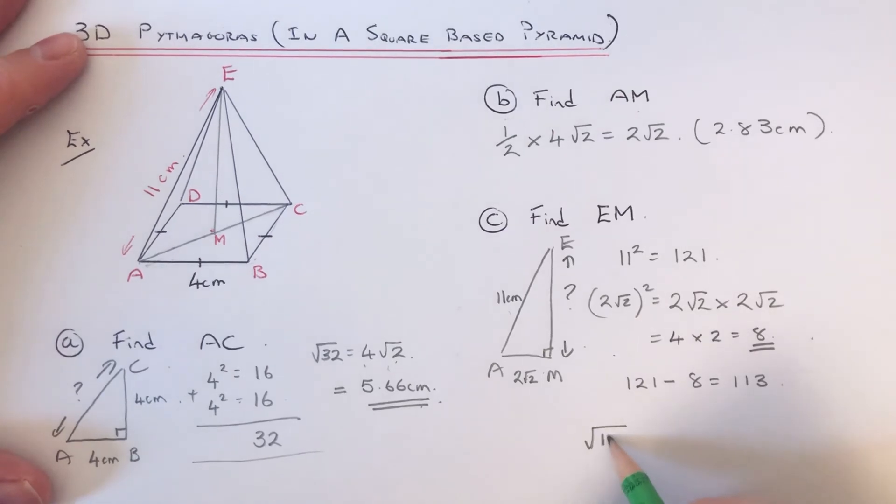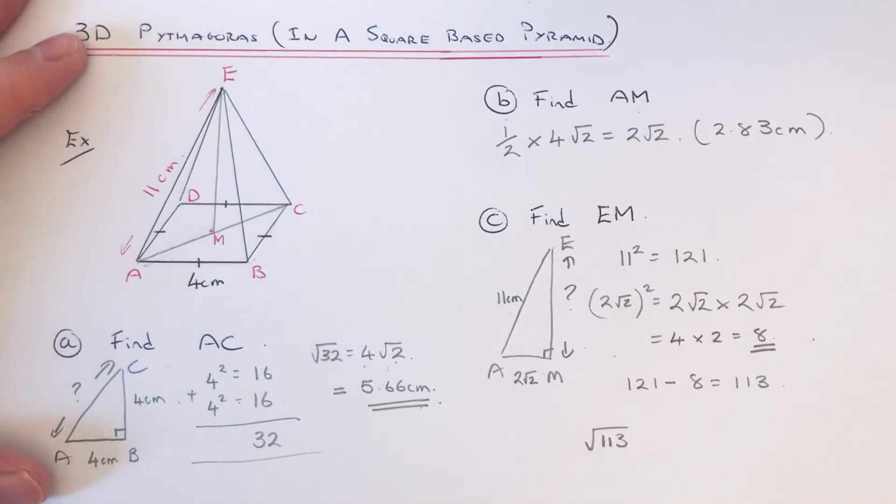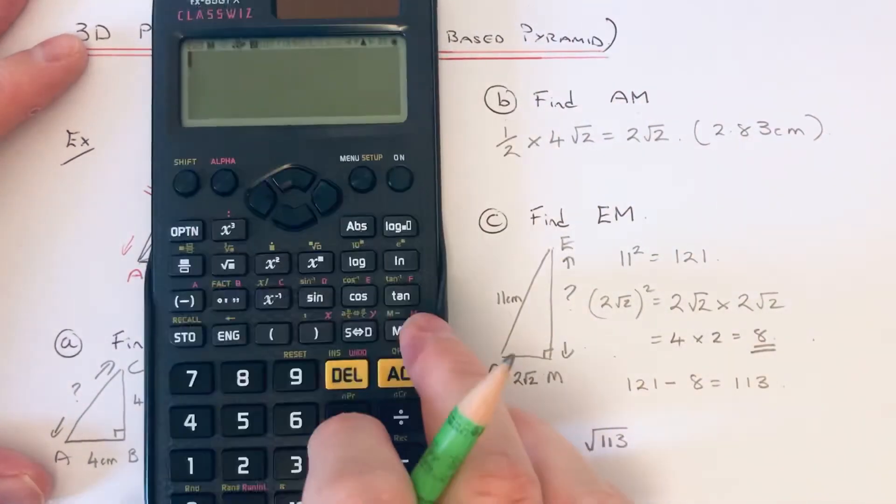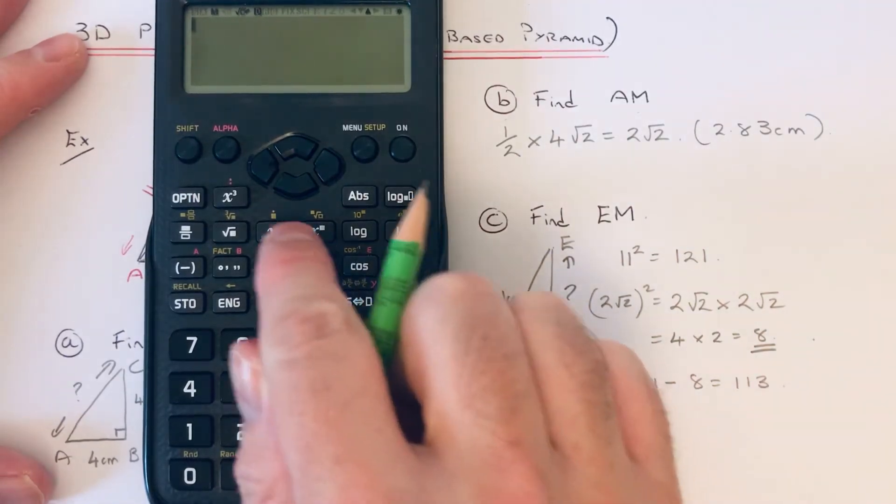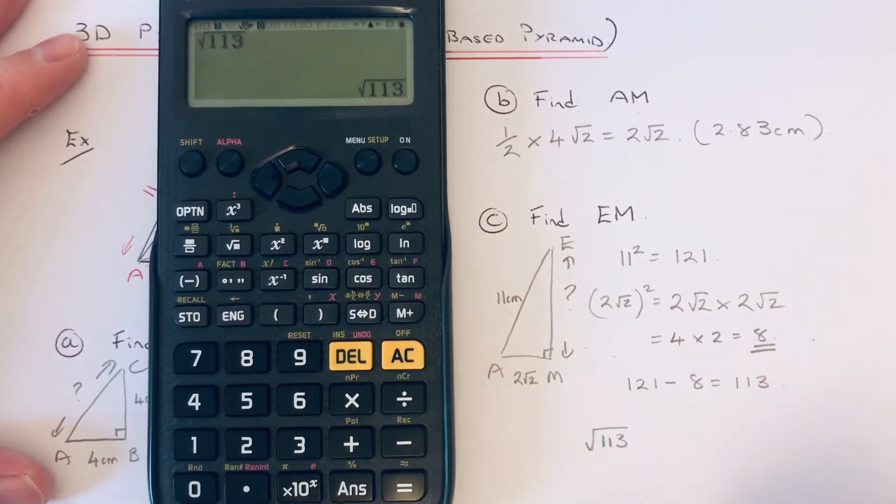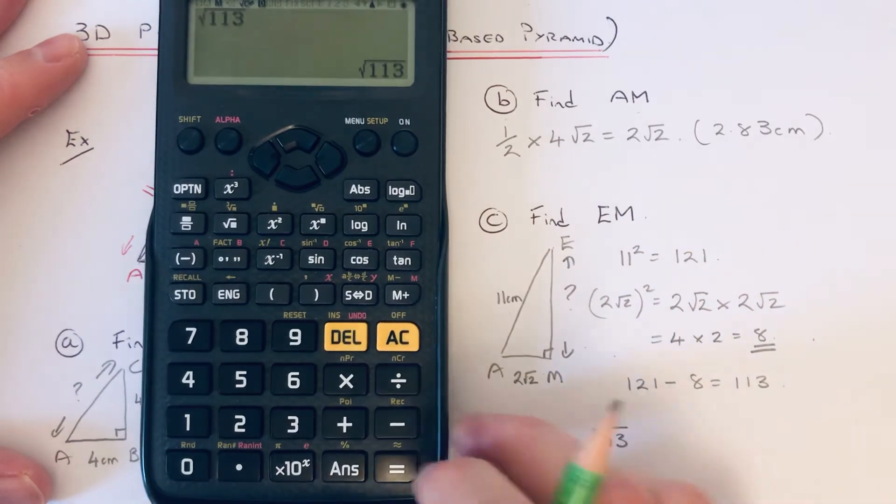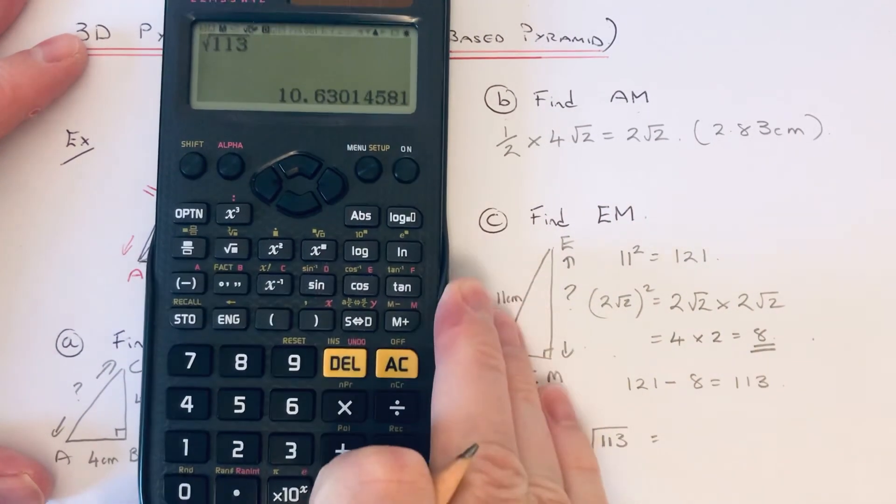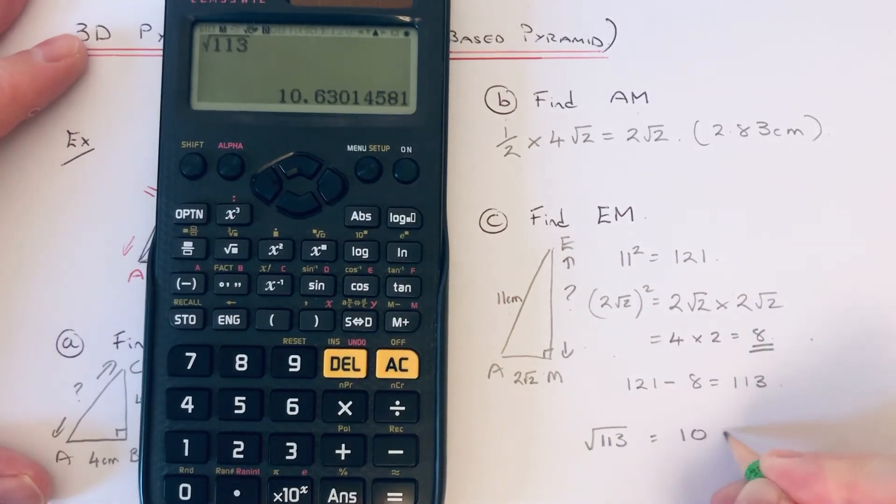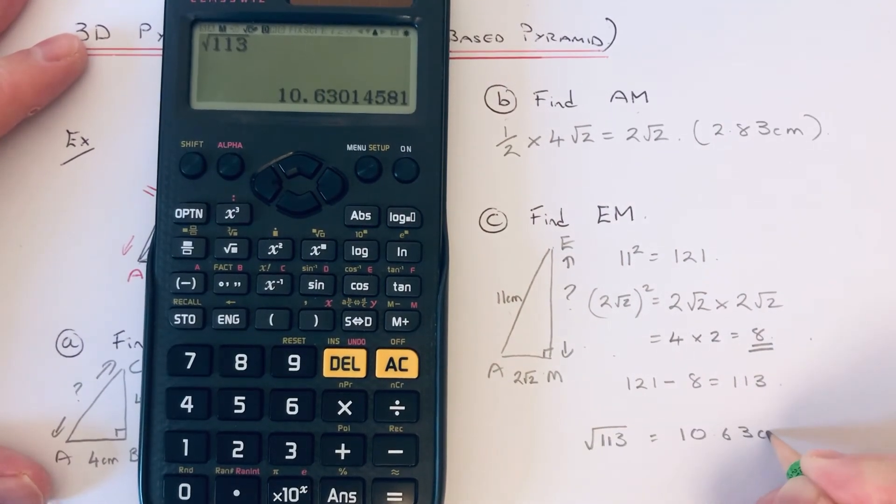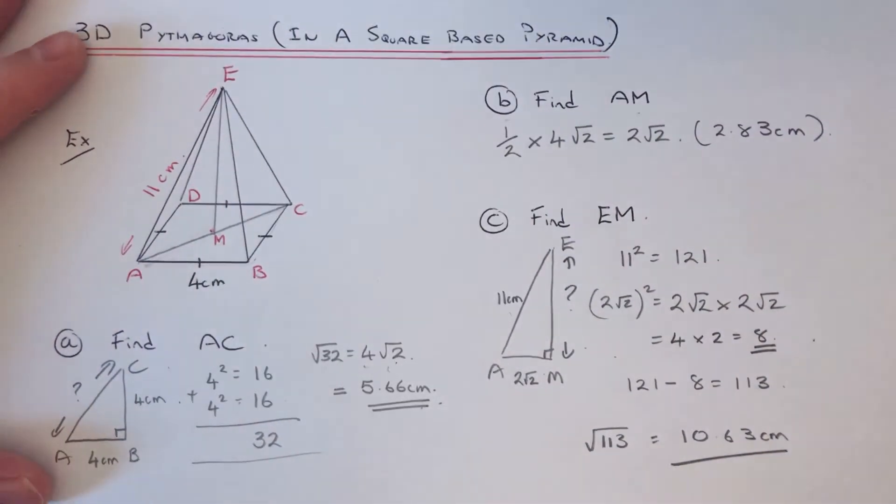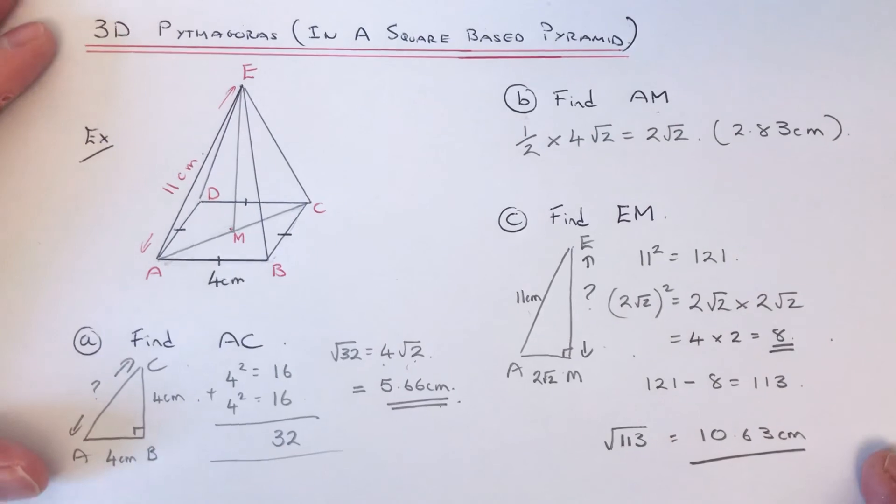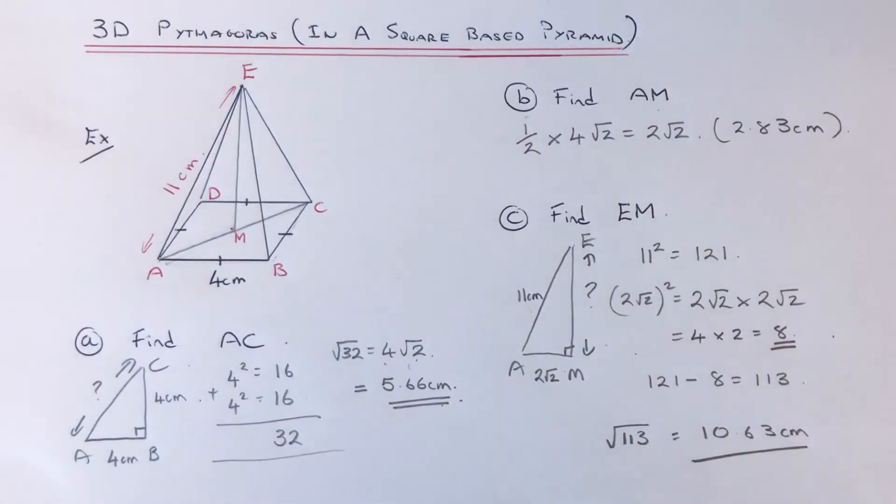And then we've got to square root 113. So I don't think that surd simplifies. Let's just check—no, it doesn't. So that's the answer in surd form. If you want it as a decimal, then just type it in, so we get 10.63, and that's your final answer. So I hope you liked this video. If you did, make sure you like and subscribe. Thanks for watching, guys. Bye-bye!